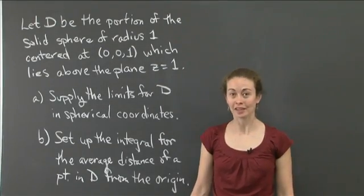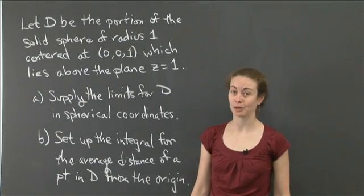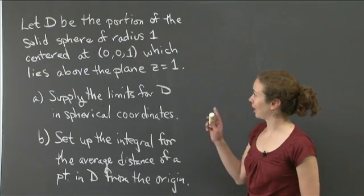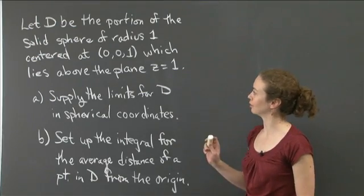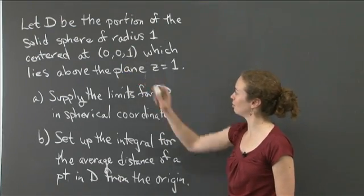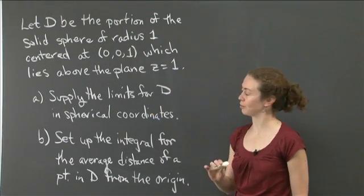Welcome back to recitation. In this video, I'd like us to work on the following problem. We're going to let capital D denote the portion of the solid sphere of radius 1 that's centered at (0,0,1), which also lies above the plane z equals 1.